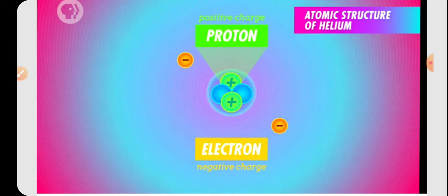The protons are having the positive charge and the electrons are having negative charge. So basically there are two types of charges. One is positive and other is negative charge.